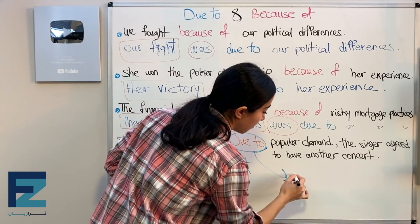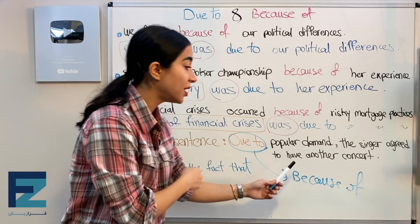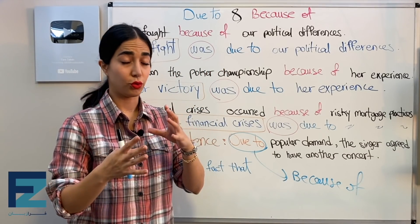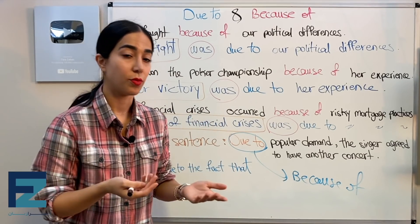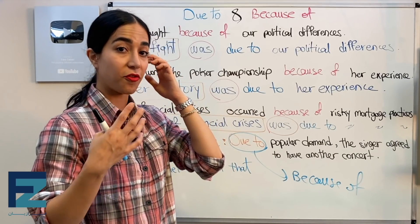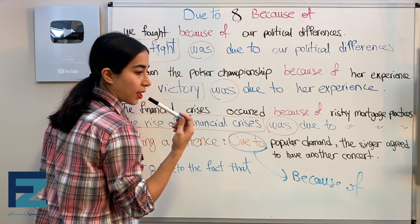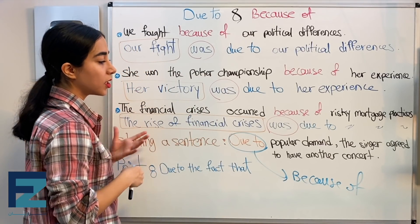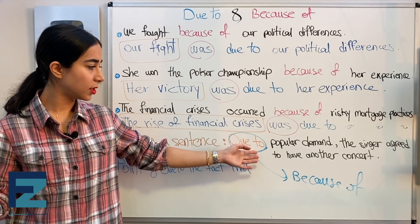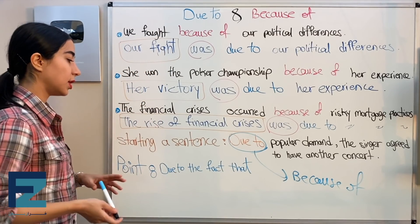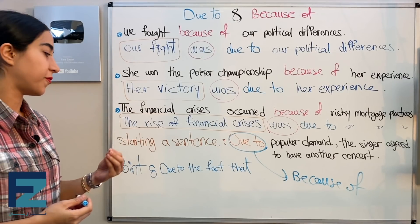You cannot use 'due to' and 'because of' interchangeably. Each has its own role depending on whether it modifies a noun or a verb. Even using the 'caused by' trick confirms it: 'The singer agreed to have another concert caused by popular demand' — doesn't work, so 'due to' is wrong here.